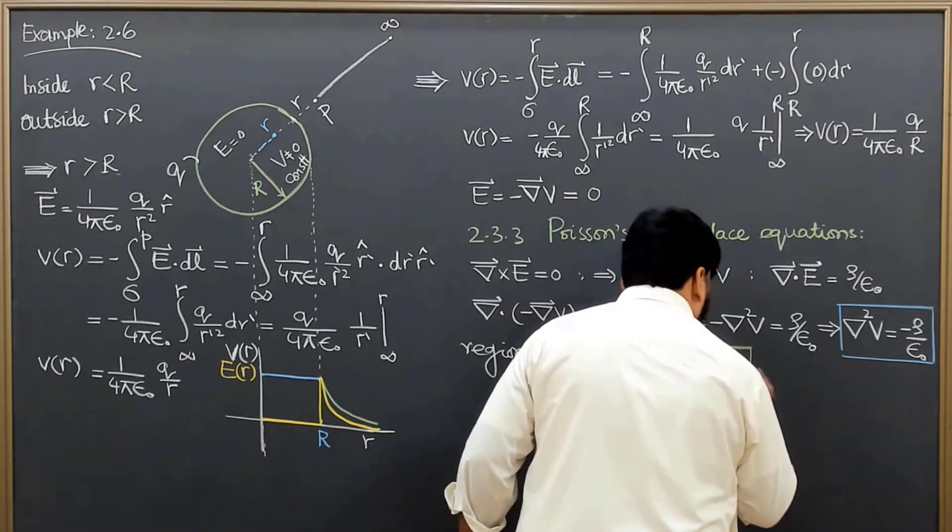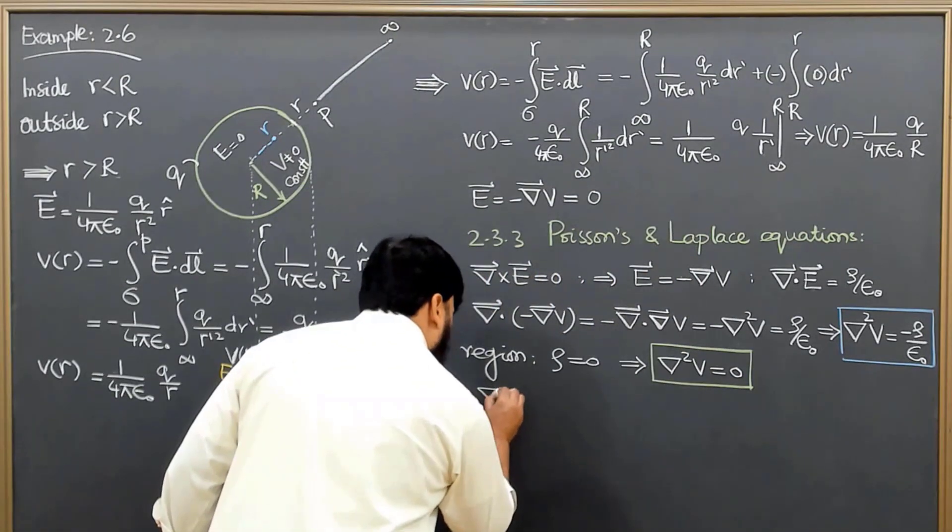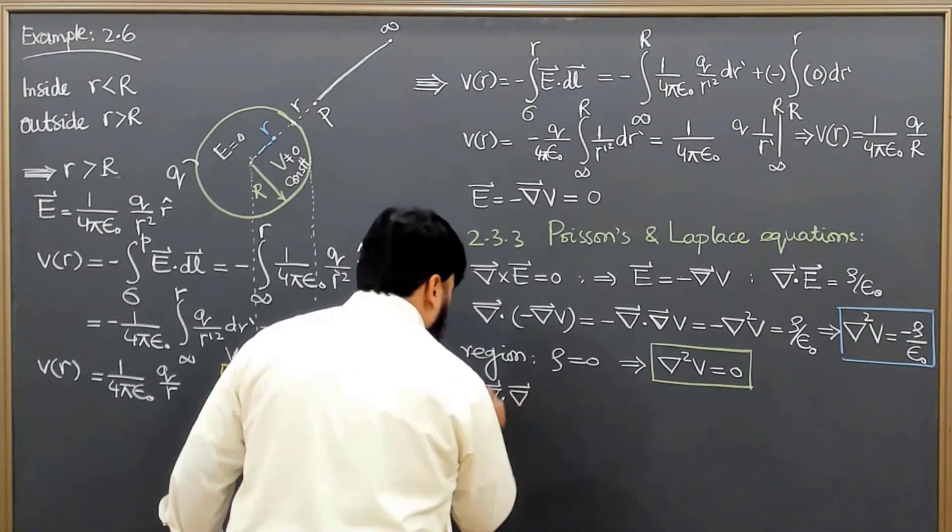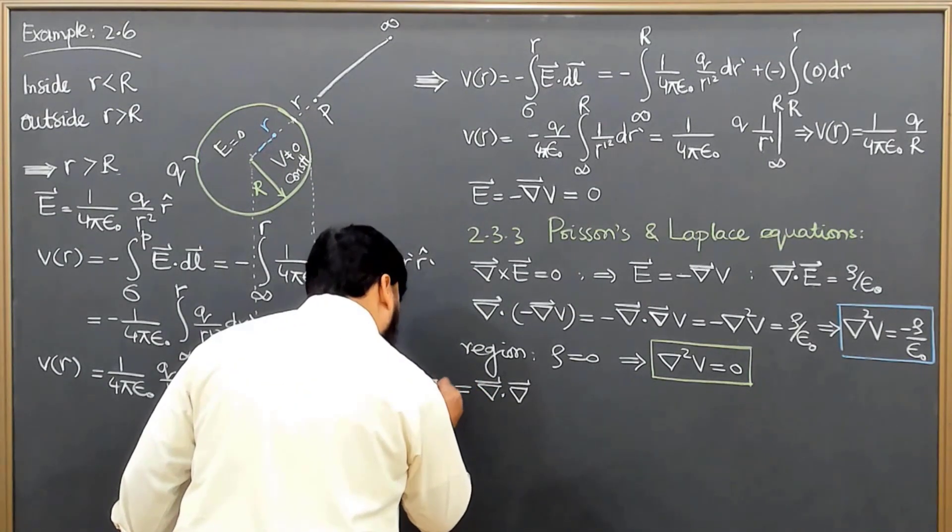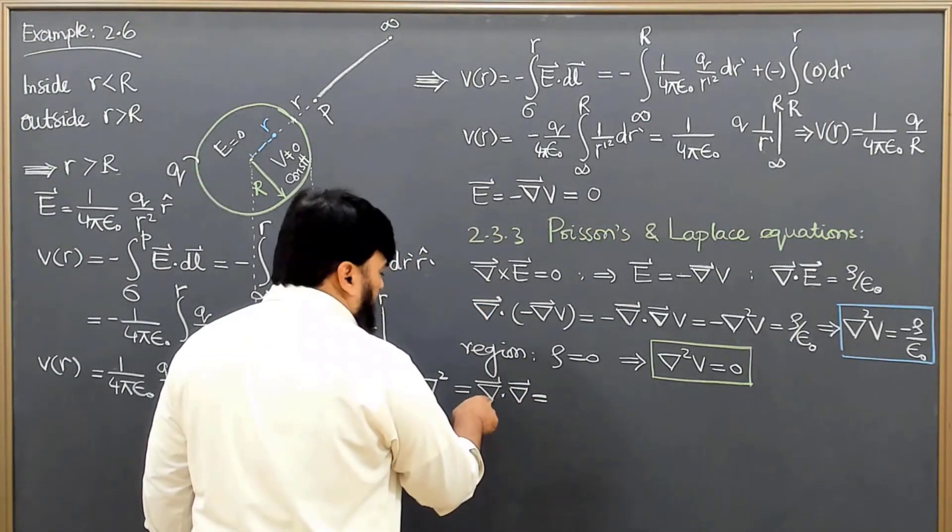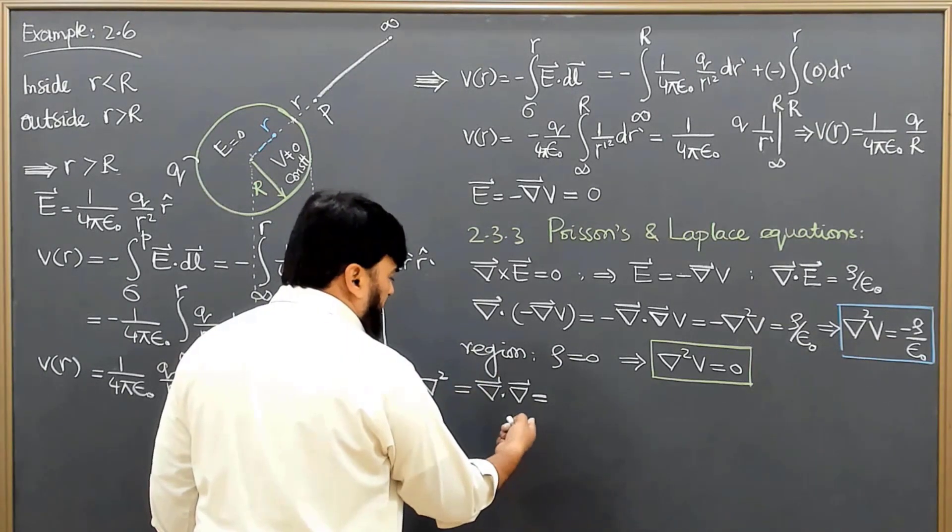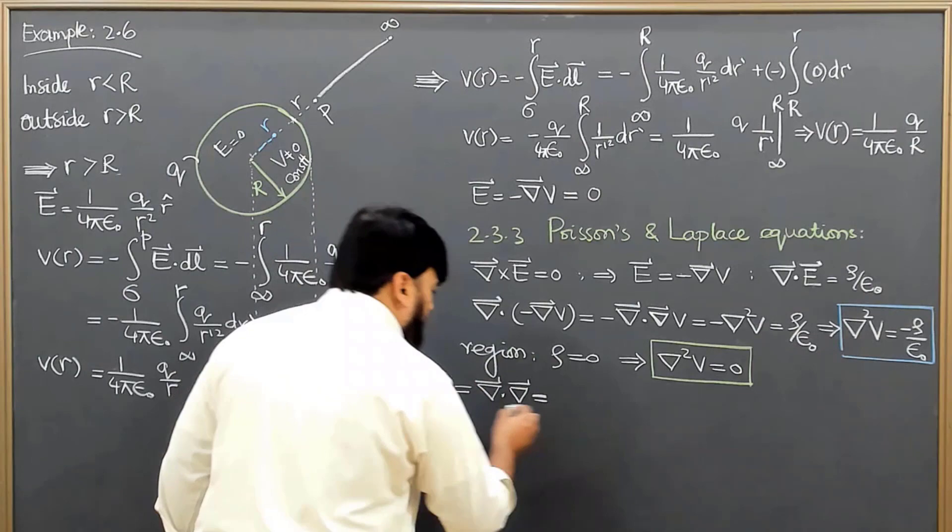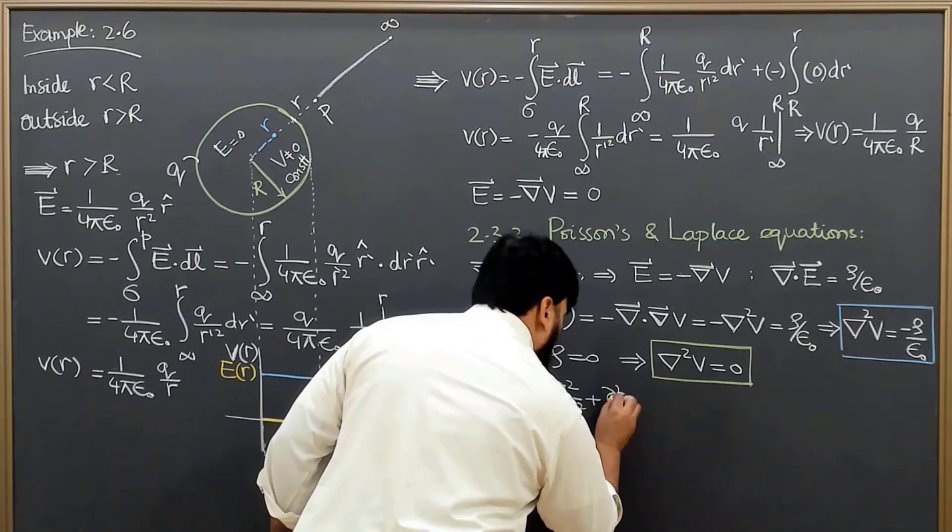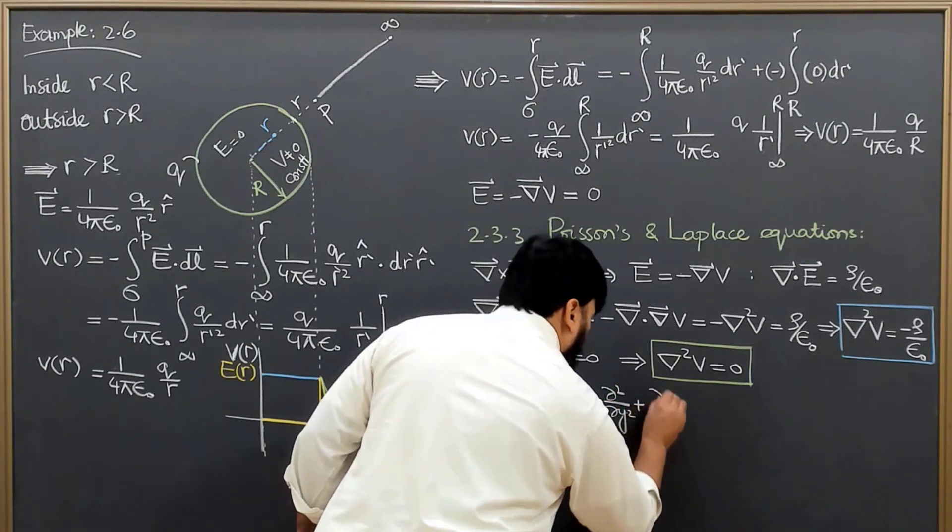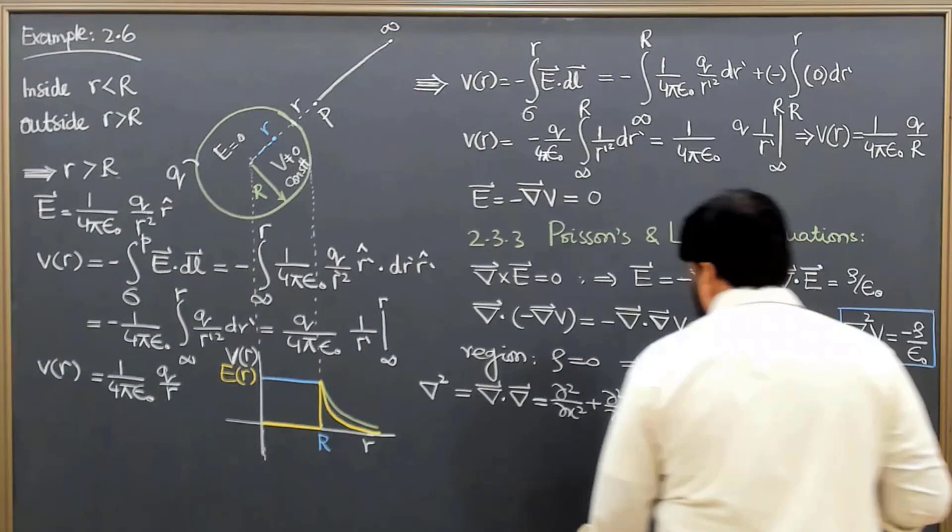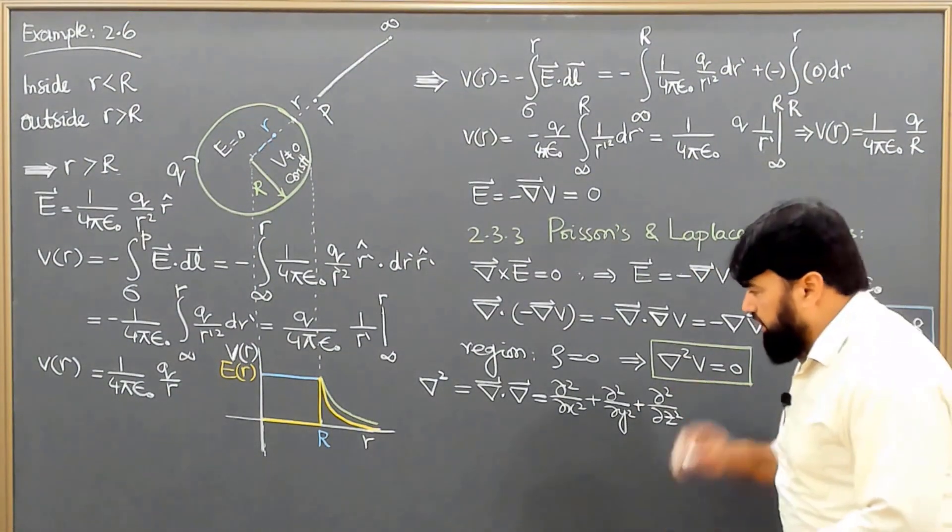∇² we can write as the divergence of a gradient equal to 0 in this equation. This is the dot product of two gradients, and we know that this is ∂/∂x and ∂/∂y and ∂/∂z, so it's a dot product. This will be equal to ∂²/∂x² + ∂²/∂y² + ∂²/∂z². So this is the expression for the Laplacian.